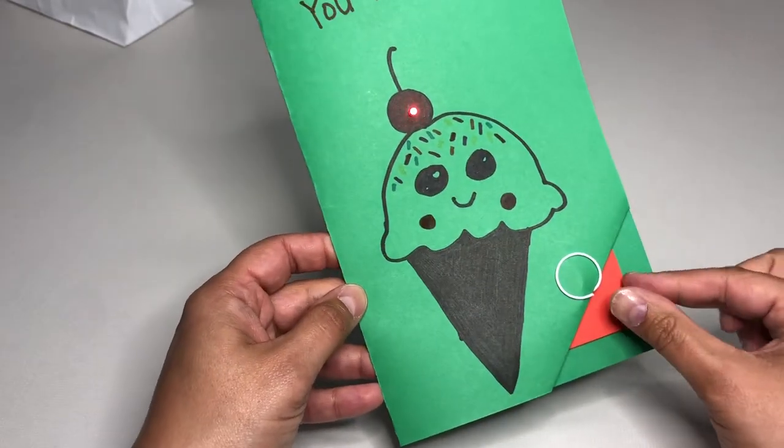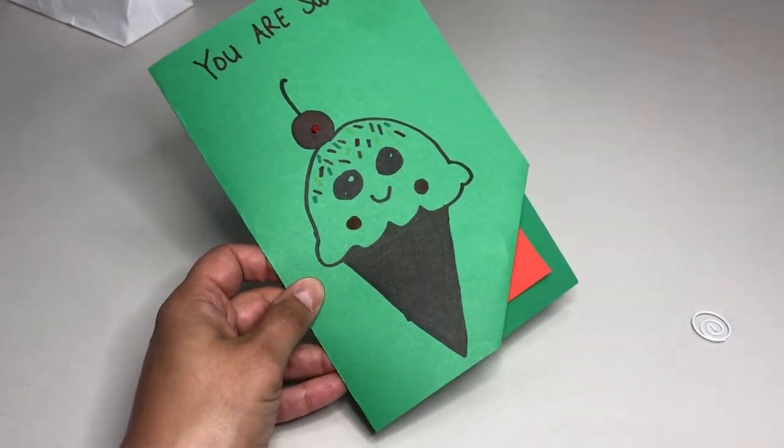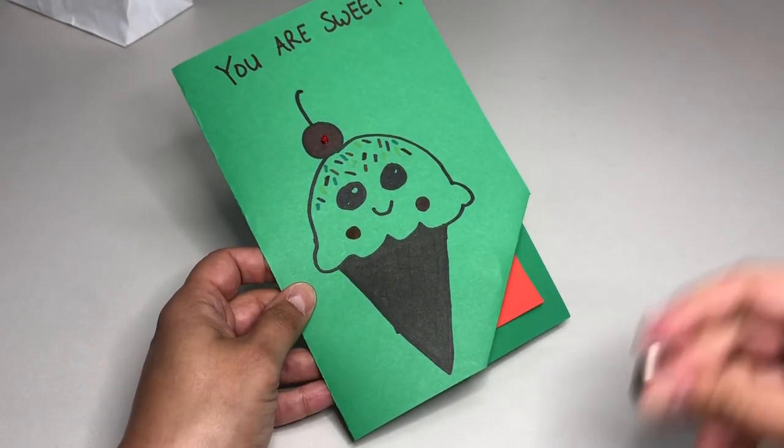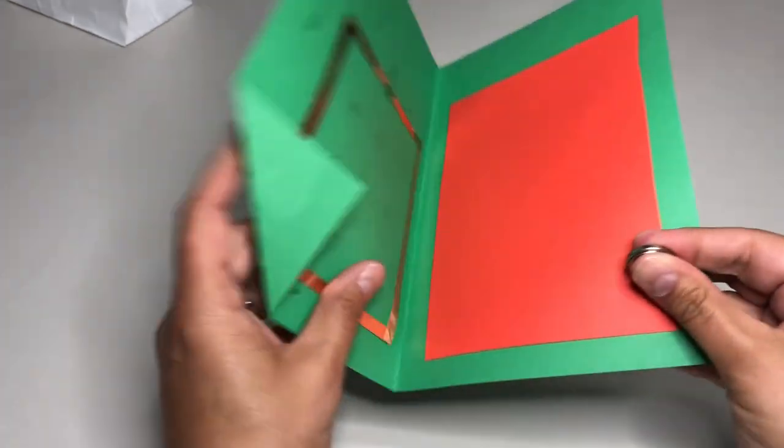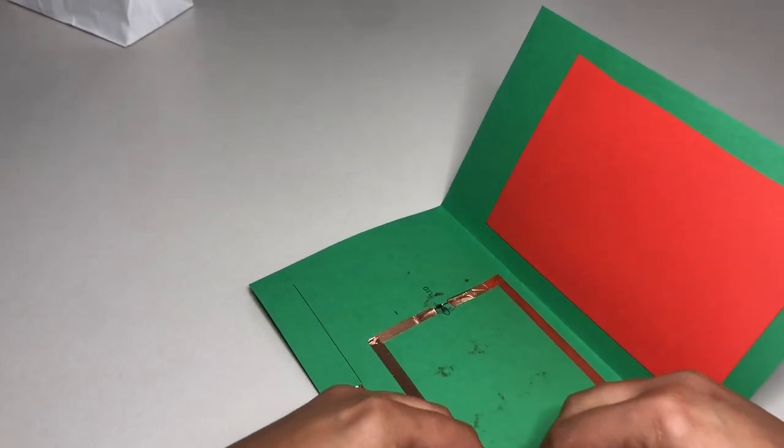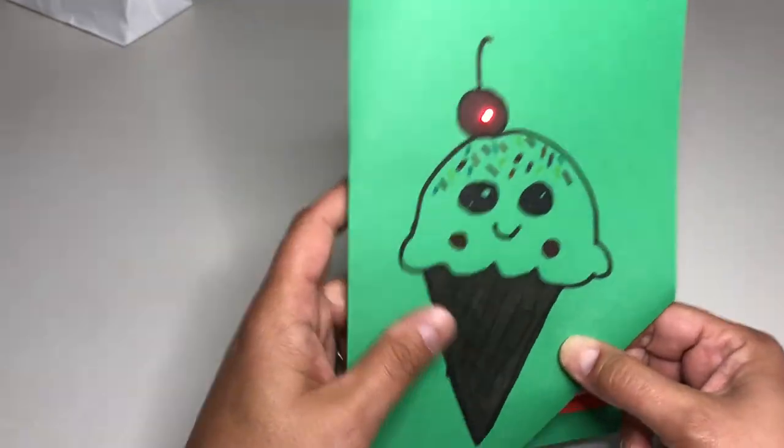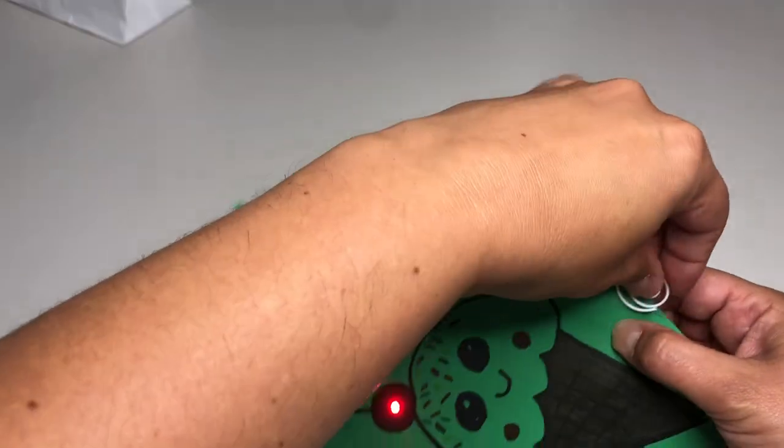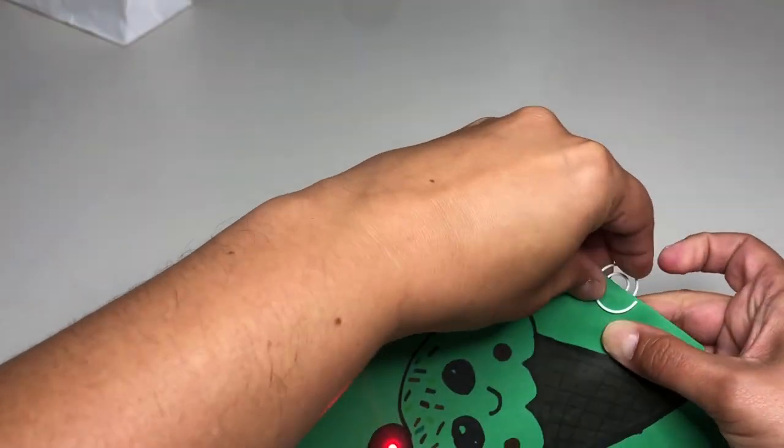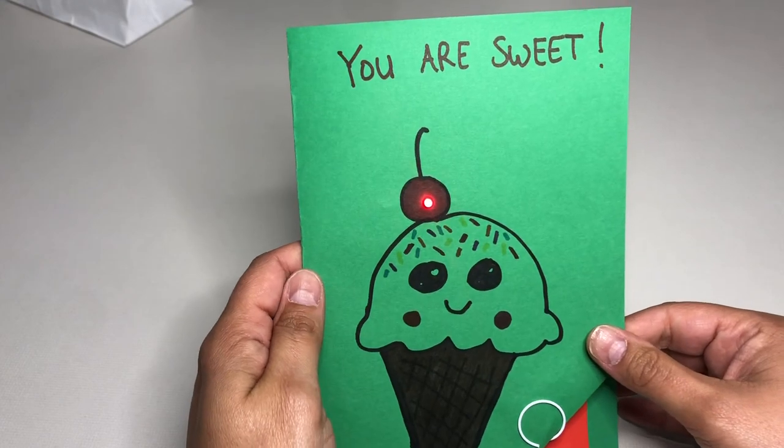Any time you want to turn it off, you can just take the paper clip off and the coin cell battery out and then you can turn it on again. Make sure your plus side matches up to the plus, folds over to the negative. Put that back on. There you go.